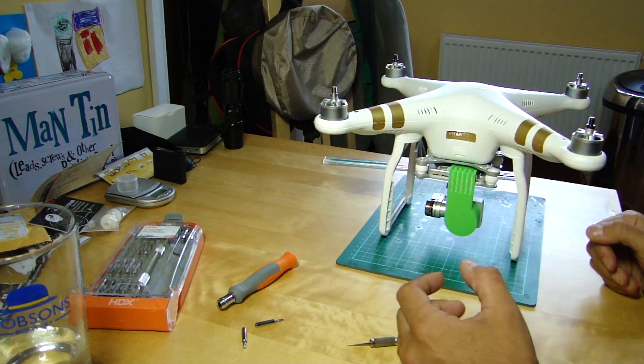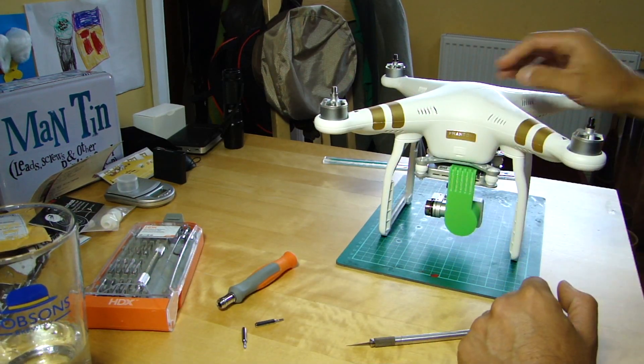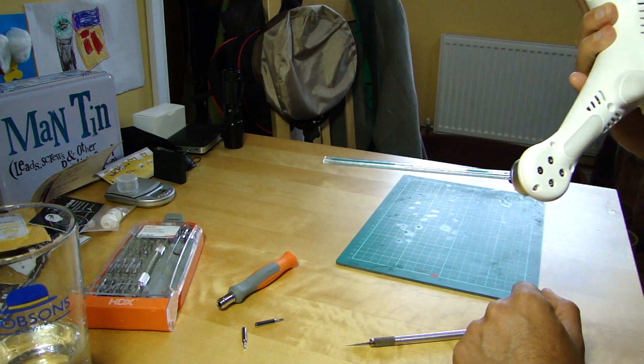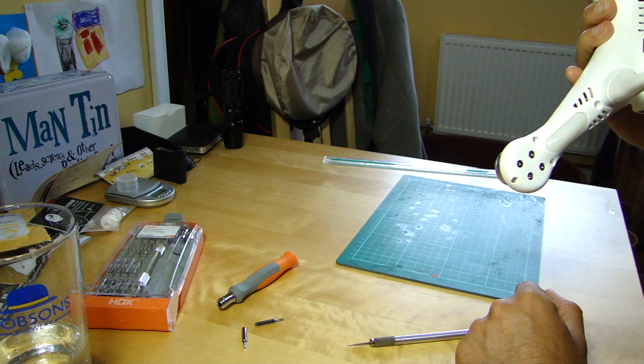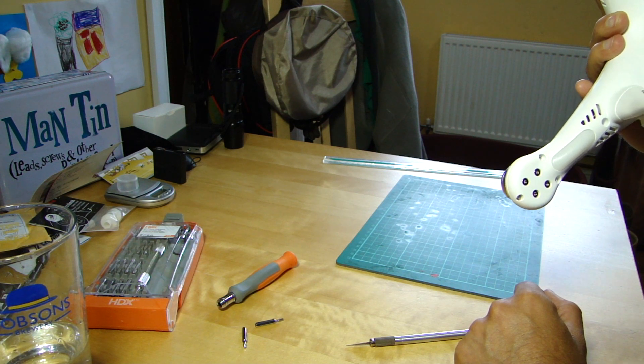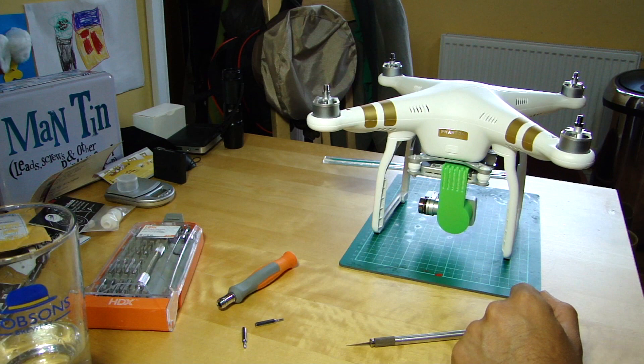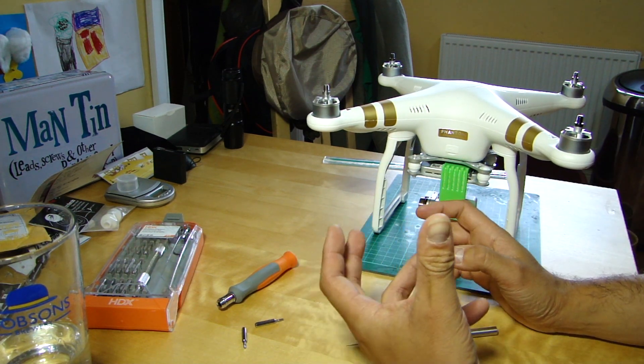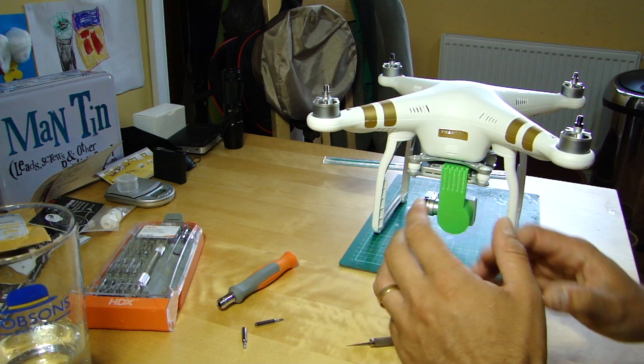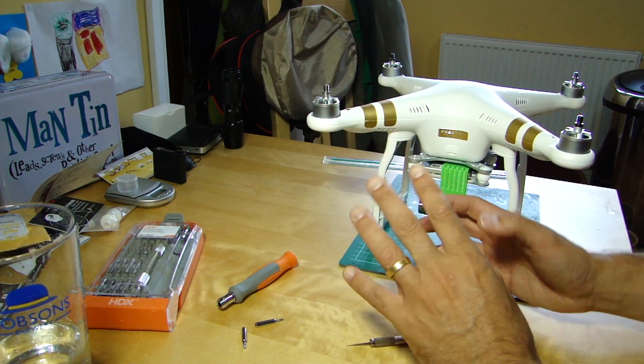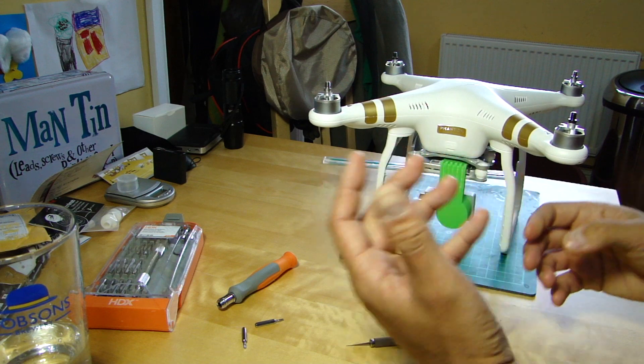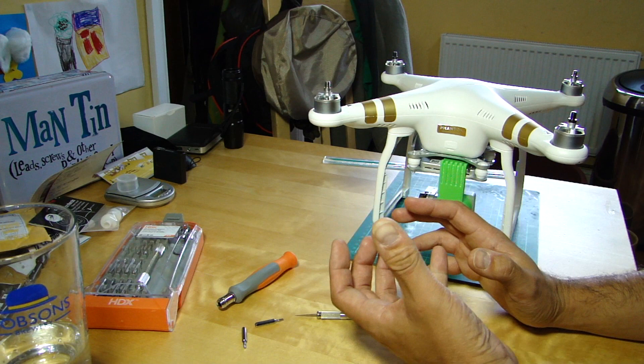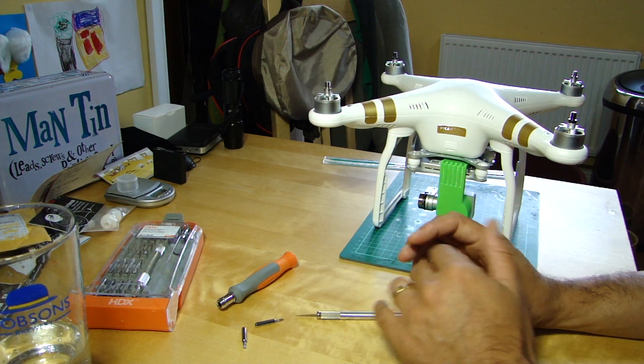Let's get the lid off. As you've seen in my previous video when I had an initial look at the P3 when I got it, DJI have changed to torx head screws, which is actually very good because you're much less likely to strip those if you get the right size bit in them. It's not something that's in everyone's standard screwdriver set at home.